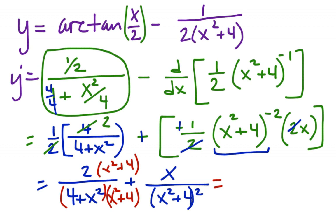So final answer: maybe 2x squared plus x squared plus 8 in my numerator. And actually, I'm okay with keeping that in factored form. Denominator is (x squared plus 4) squared.